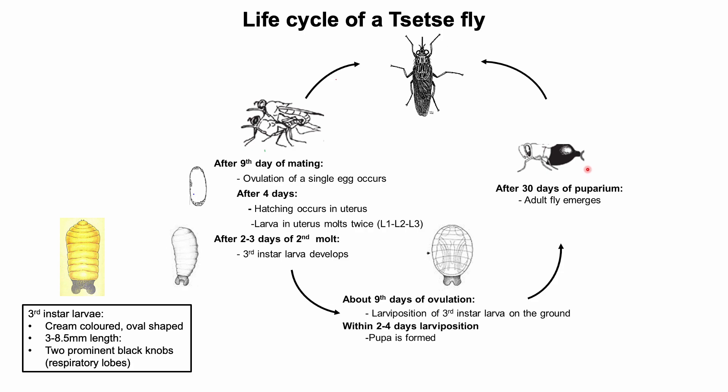Adult flies emerge about 30 days after the formation of the puparium. The lifespan of a female tsetse fly is generally 20 to 40 days, but may reach up to three to four months. A male fly can survive only three to four weeks and typically mates only once or twice during its entire lifespan. The low reproductive rate of these flies is compensated by the extreme protection given to each larva by the female within the uterus.